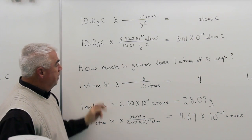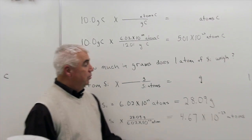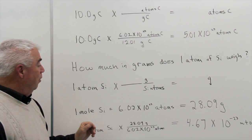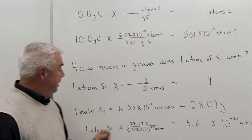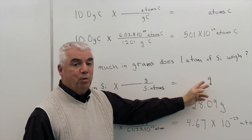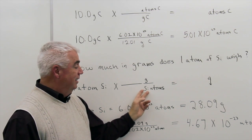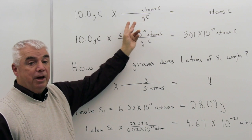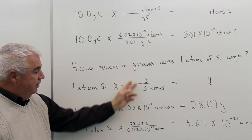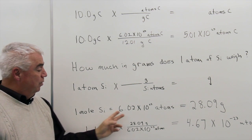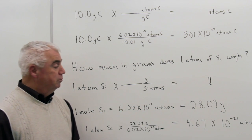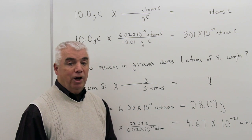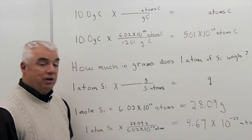Another question might be: how much in grams does one atom of silicon weigh? A few years back, if you could have worked a problem like this, you would have received a Nobel Prize. Now it's pretty easy, knowing what we know. Again, look for the number — I have just one atom of silicon. I'd like to know how much it weighs in grams. Grams goes in the numerator; silicon atoms comes down in the denominator. We're going to use the mole concept to derive the other two numbers: one mole of silicon is 6.02 times 10 to the 23rd atoms of silicon.